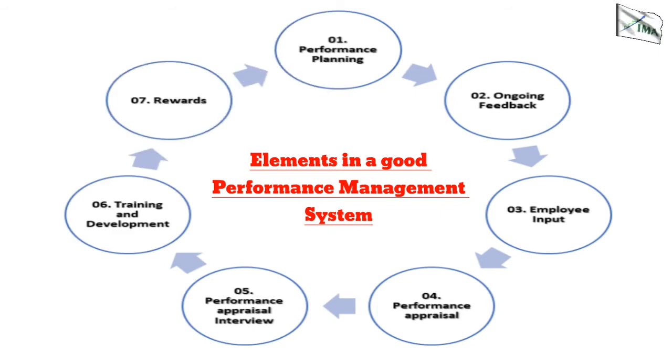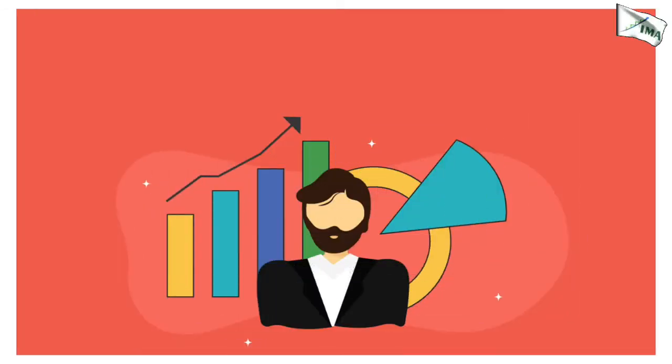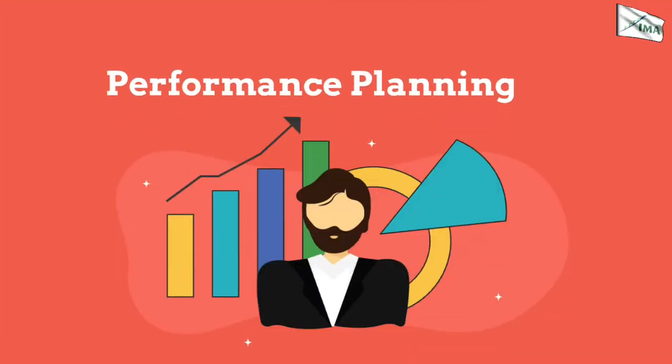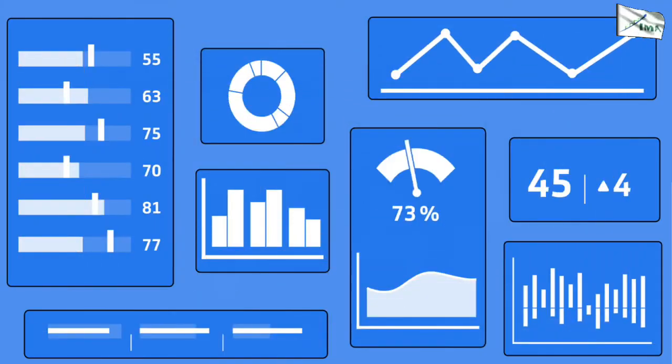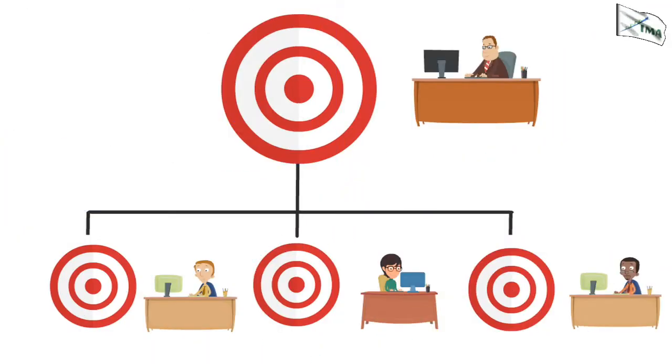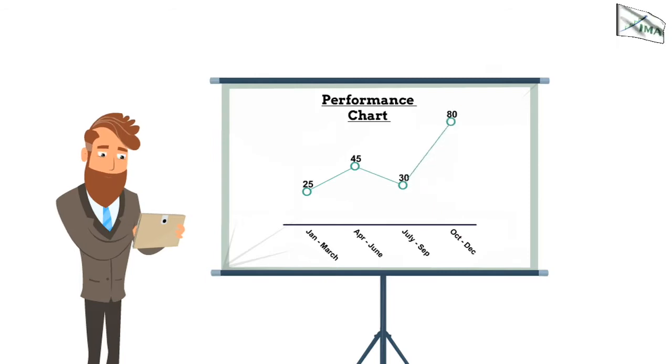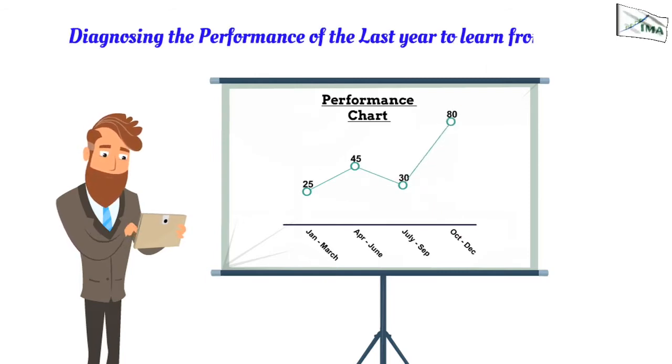First, we look at performance planning. The performance of a company and its employees has to be planned well. Normally this is done with the system of KPIs for all the employees. A concept of deploying goals from senior level to junior level has to be used. This will ensure the alignment of goals from top to bottom in the organization. The company has to ensure diagnosing the performance of the last year to learn from mistakes.